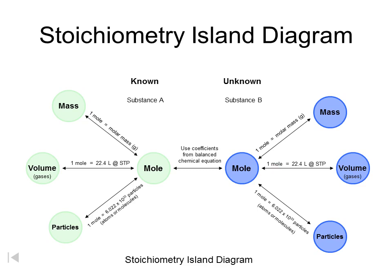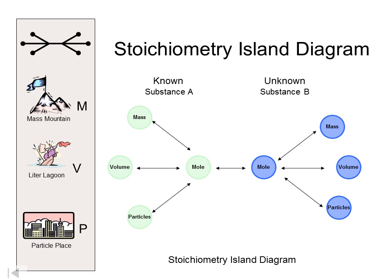How do we go from substance A to substance B? According to this, we use the coefficients from the balanced chemical equation — I'll show that as I solve problems so you'll see how it works. This map will allow us to figure out the number of steps. For example, if we start at mass of one substance and go to volume of another substance, that will take one step. Hopefully this Mole Island Diagram will be of some use to you as well. See you next time.